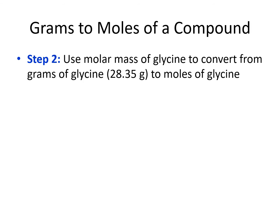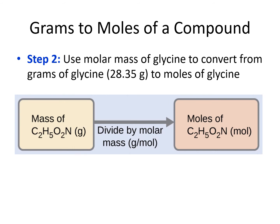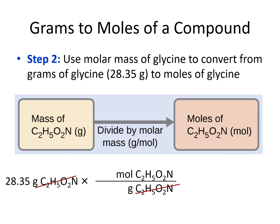In our second step, we take our grams of glycine and convert to moles of glycine by dividing by the molar mass of glycine. We start out with our known quantity, 28.35 grams of glycine. We choose a conversion factor with grams of glycine on the bottom to cancel out with our starting grams, and moles of glycine on the top since we are trying to solve for moles. We fill in the molar mass we solved for in step 1 next to grams, so it ends up going in the denominator. We do 28.35 divided by 75.067 and come out with 0.378 moles of glycine.